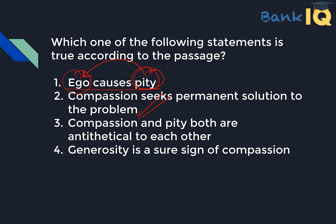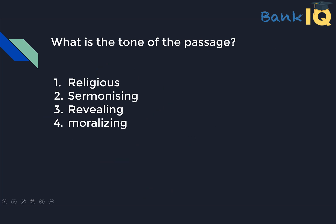Which one of the following statements is true according to the passage? 'Ego causes pity' — this is not directly mentioned. What is mentioned is that pity comes in egoistic people. 'Compassion seeks permanent solution to the problem' — correct, absolutely right. 'Compassion and pity are antithetical to each other' — they are not completely antithetical; both are somewhat similar too, so that is not entirely correct. 'Generosity is a sure sign of compassion' — again not true, because in pity you are also being generous but with the wrong feeling — that you are a giver. So the most appropriate answer is option two.